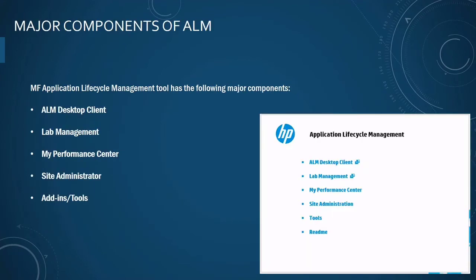The major components of ALM — when you first log in or launch the tool, this is what your home screen looks like. ALM is a web-based application that works with a browser and has very good navigation. As a centralized tool, it allows global access subjected to having connectivity to the server where it is installed. The major components include the ALM desktop client, which accesses the core part of the project; lab management to manage resources for performance testing; and the performance center for centralized performance testing, where you can configure a scenario and run it if you have the license.